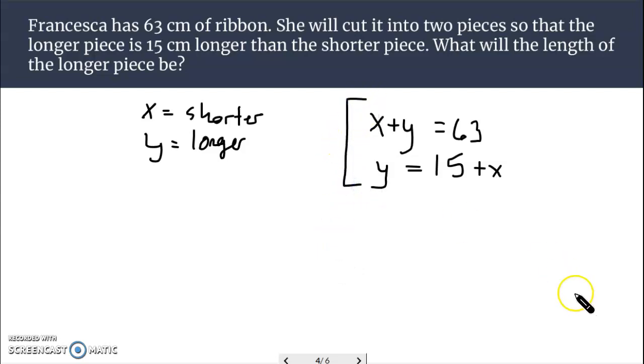We can solve this using substitution. We can take this quantity, 15 plus x, and we can substitute it in for y up here. Then we can take and rewrite that first equation. So we have x plus y equals 63. And this is where y was, but we're not going to use y. We're going to use the 15 plus x.